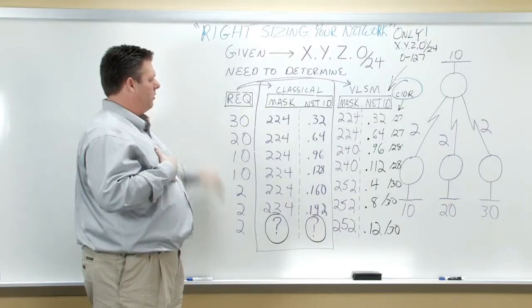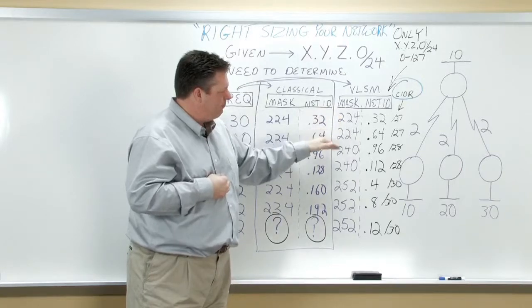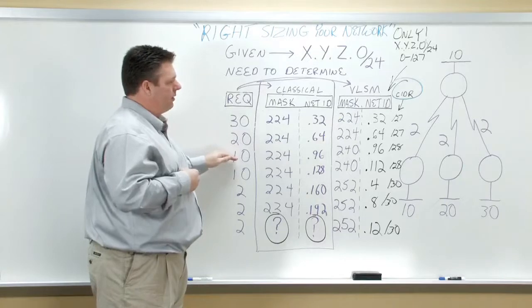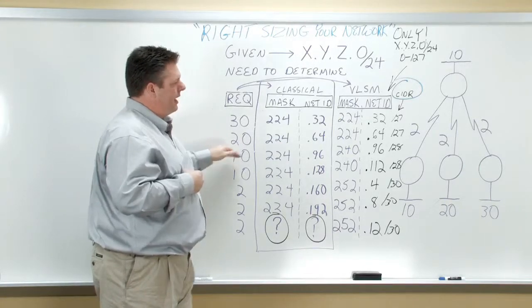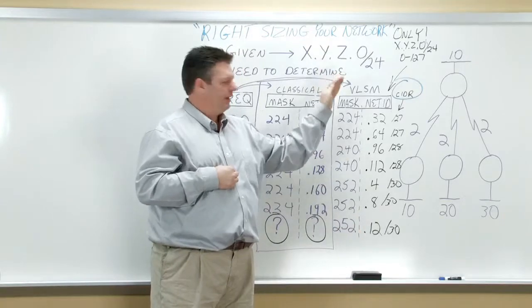pick a mask that best fits and represents the number of hosts that's required for that requirement and that need, and then apply a network ID that solves the problem within my prefix.